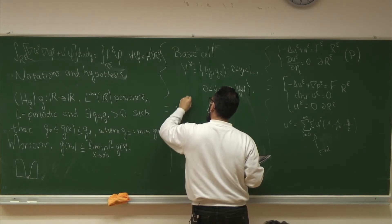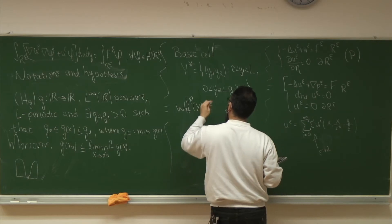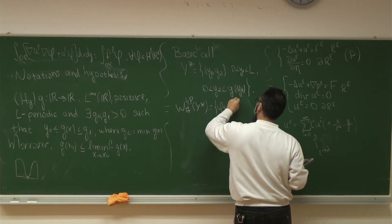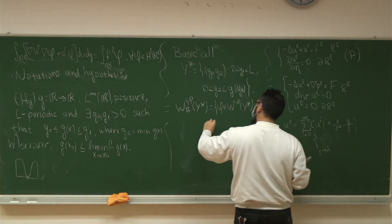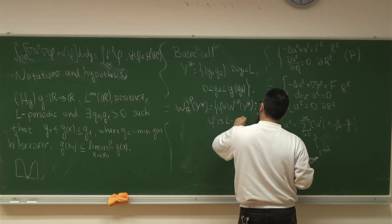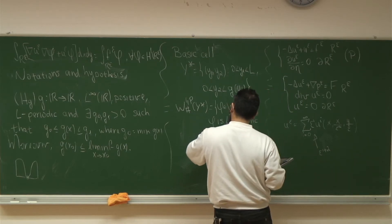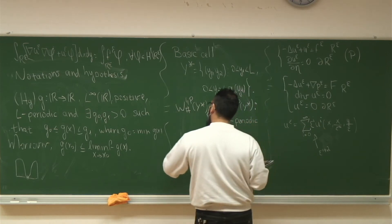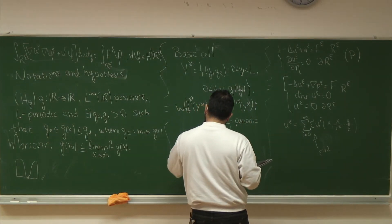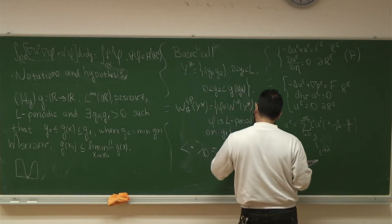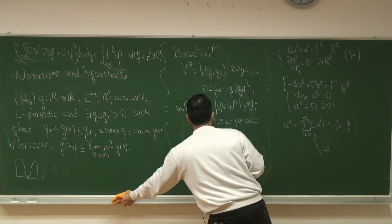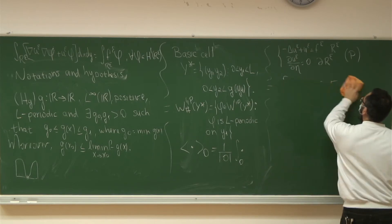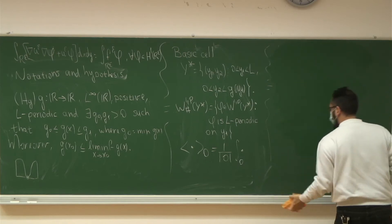We also use the following notation for a Sobolev space: it will be functions in this Sobolev space such that phi is L-periodic in its first variable. I will also denote the average as usual — some people denote it another way, but I prefer this notation in the text.